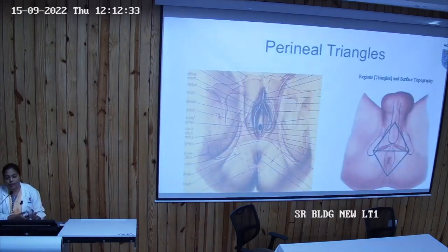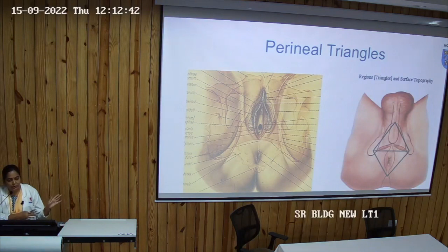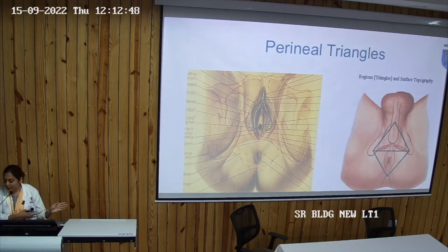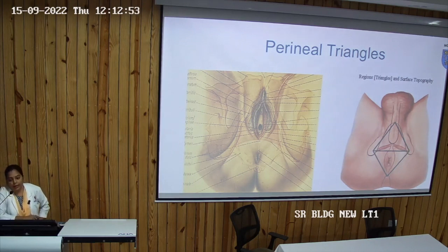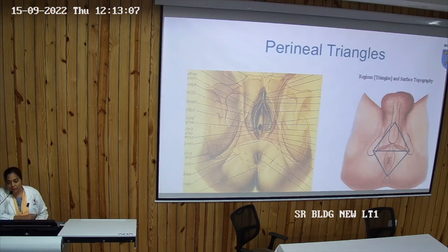The perineum has superficial boundaries and deeper boundaries. Superficial boundaries, which are seen in the superficial region anatomically: anteriorly, it is bounded by the root of the penis in the male or the mons pubis in the female; posteriorly, by the buttocks or the upper end of the intergluteal cleft; and on the sides, by the upper part of the medial surface of the thigh.